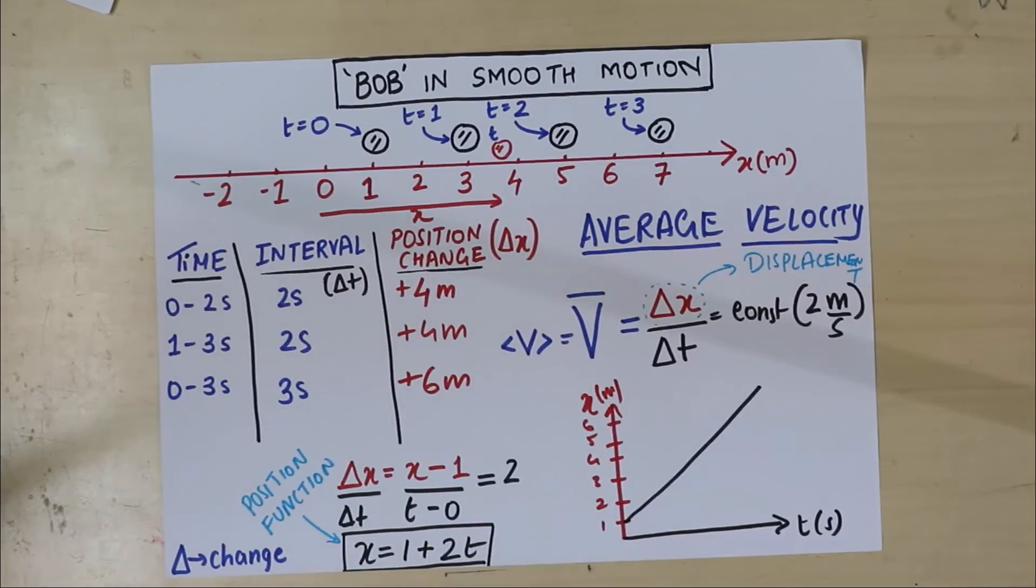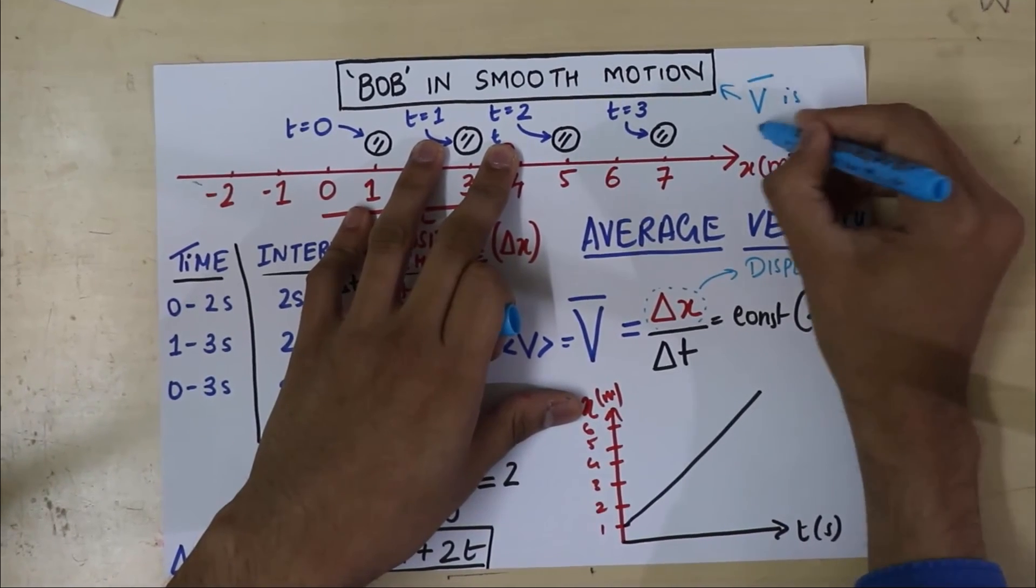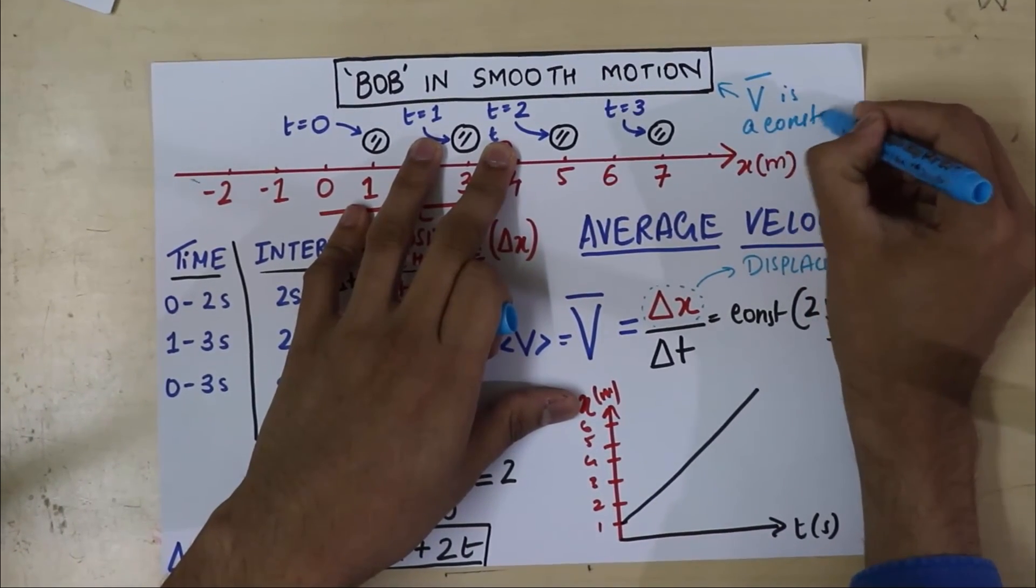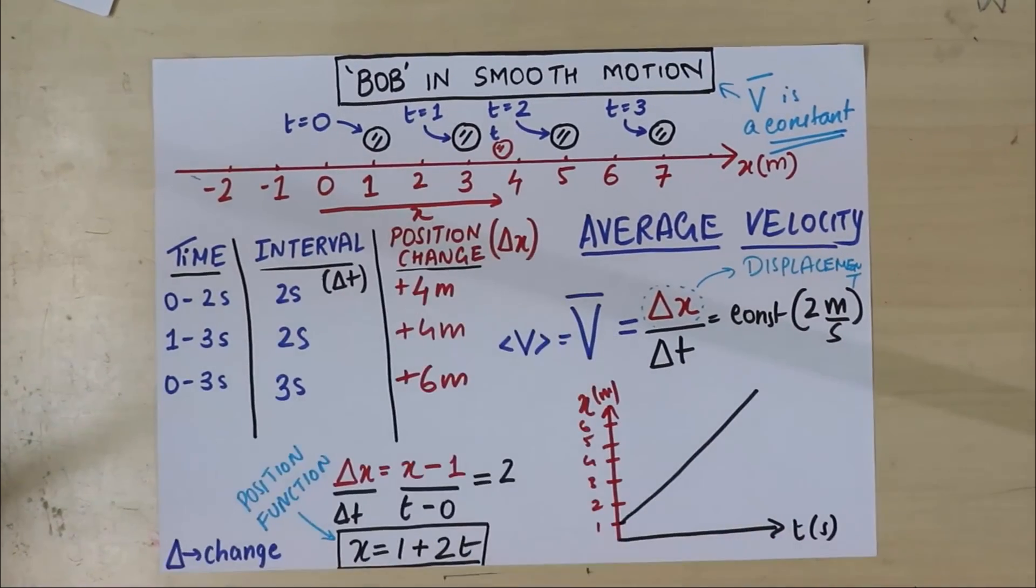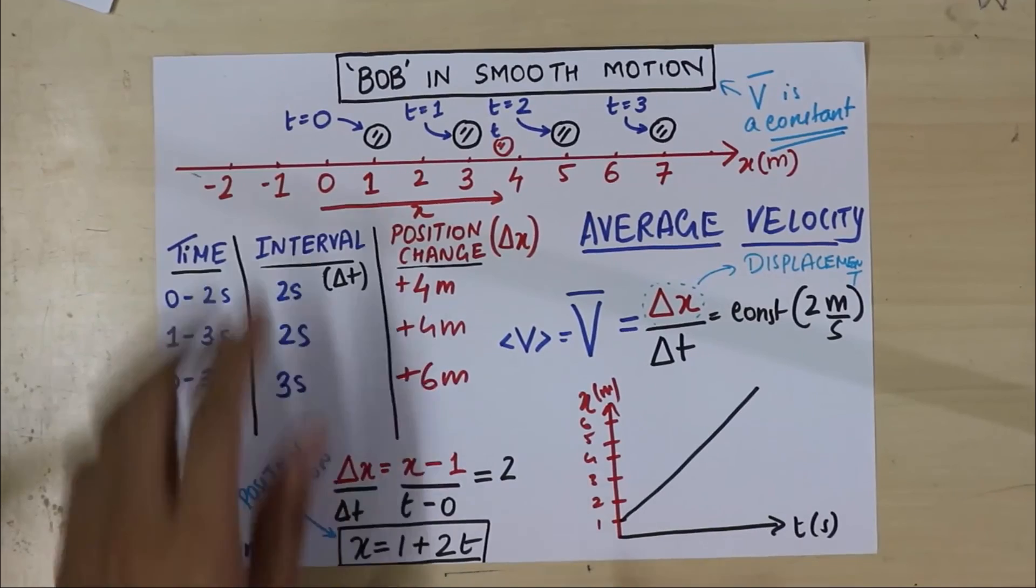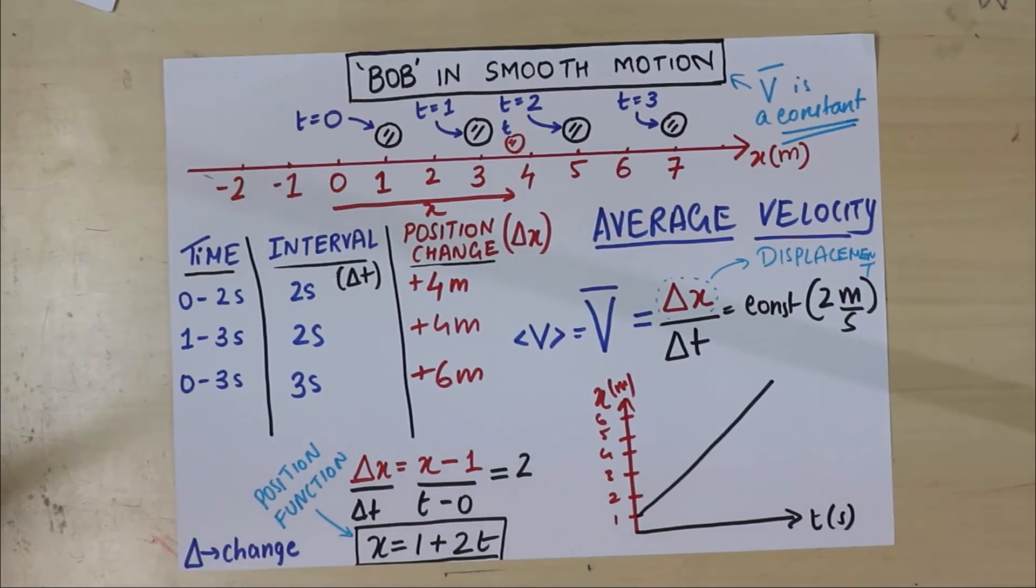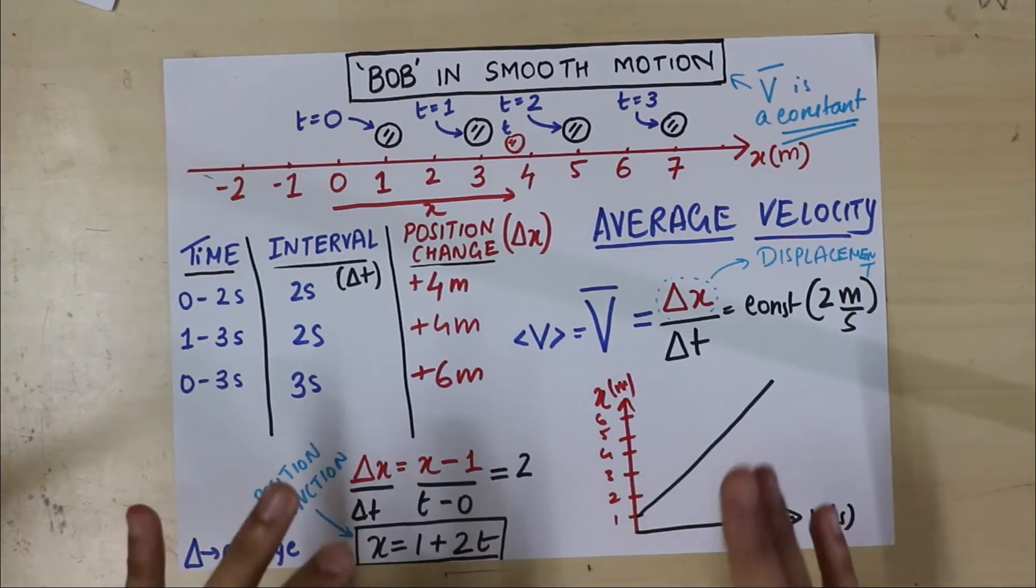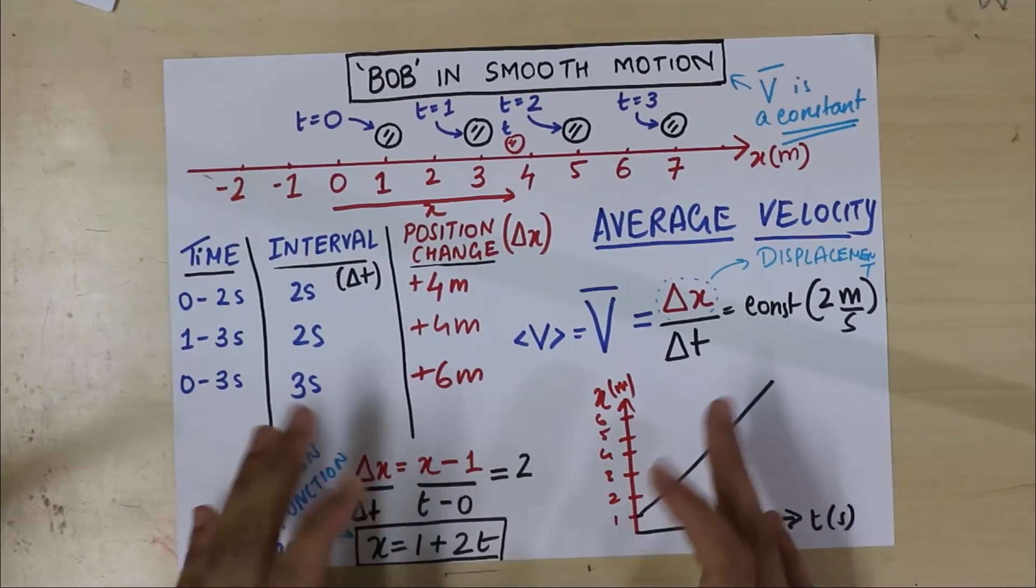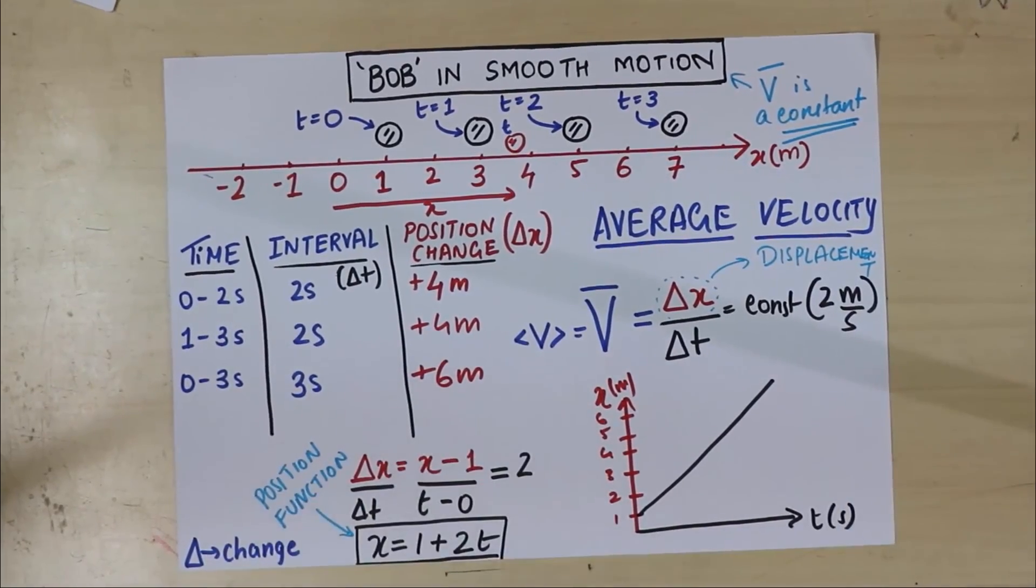Beautiful, isn't it? Look at that. So this equation and this graph is identical. So we have finally built an equation and a graph for Bob in smooth motion. So what is smooth? Remember, what is smooth? The average velocity is a constant. Okay. Now, in the next episode, I have something great in store for you. I'm going to ask you one radical question about velocity. So stay tuned for more. See you next time. Bye-bye.